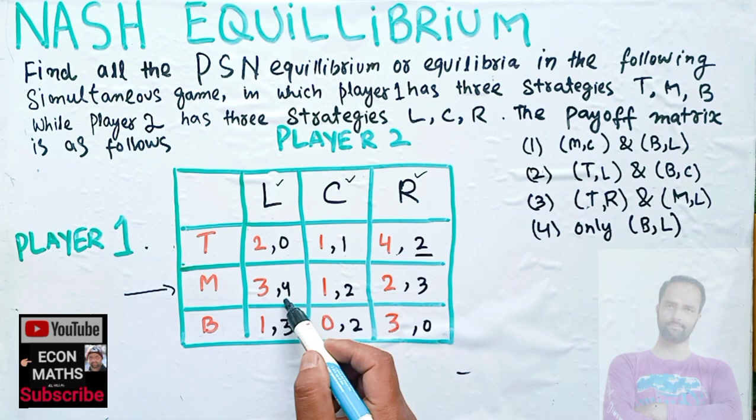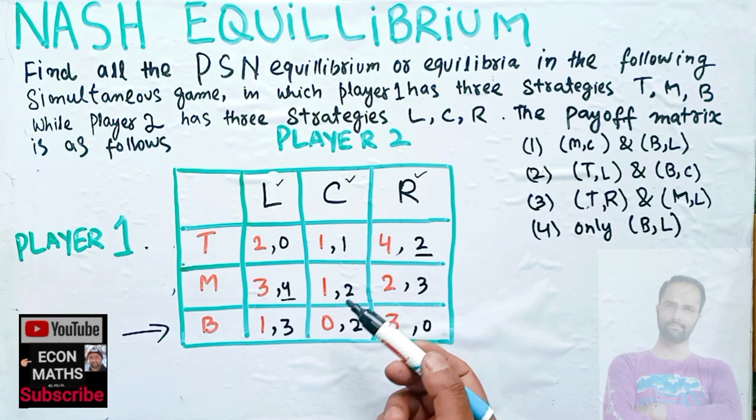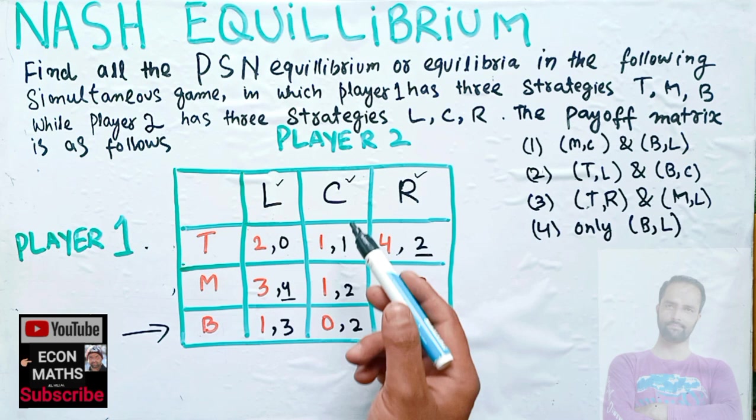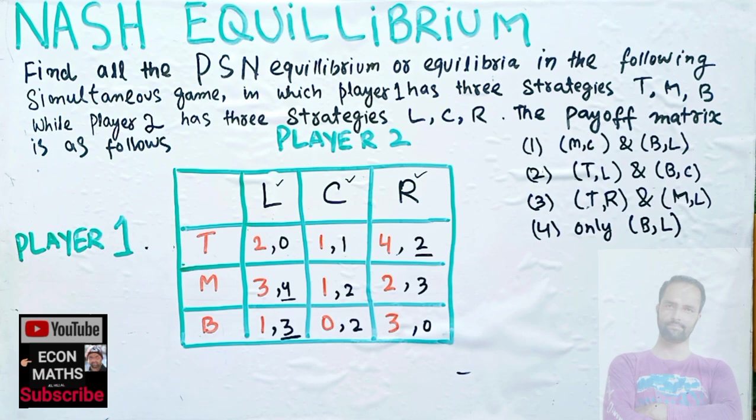Now let's say player one plays strategy B. Again, player two has three options: L, C, or R. The payoffs are 3, 2, or 0. The greatest is 3, so we underline the highest payoff. Now we change perspective and look at player two's choices.